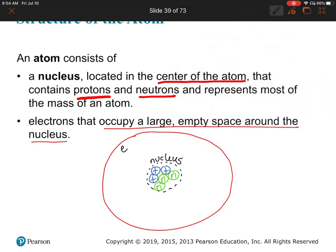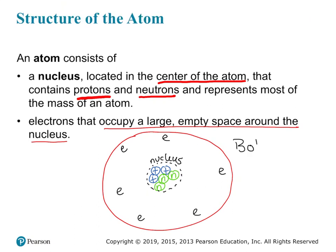Electrons occupy a large empty space around the nucleus. So we've got our atom with protons and neutrons in the middle — that's our nucleus — and then electrons floating around the outside. This is called the Bohr model of the atom. It's a simplified diagram; there are many more complex models, but for now all you need to know is there's a nucleus containing protons and neutrons, and then an electron cloud around that.